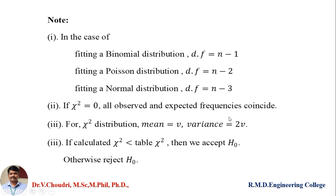Regarding degrees of freedom: in the fitting of the binomial distribution, degrees of freedom is n minus 1. For Poisson distribution, degrees of freedom is n minus 2. For normal distribution, degrees of freedom is n minus 3.